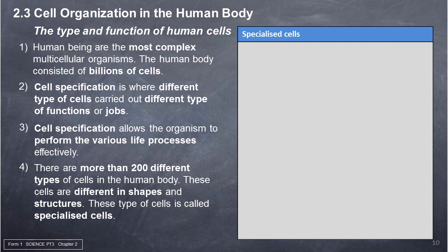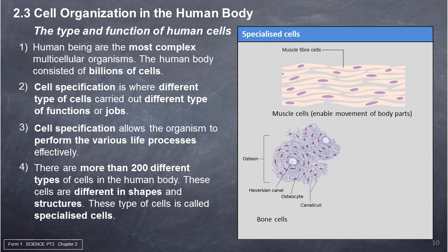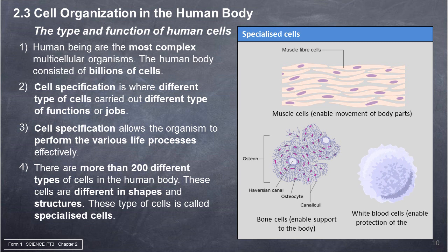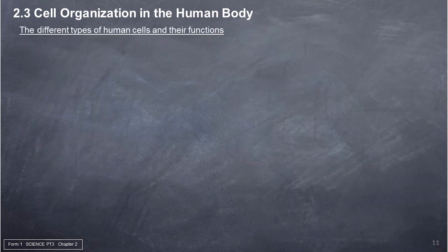Specialized cells: muscle cells enable movement of body parts; bone cells enable support to the body; white blood cells enable protection of the body against bacteria. The different types of human cells and their functions are described below.